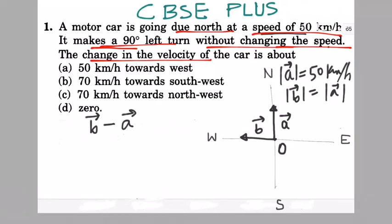We join the tails of the velocities. Now what is B minus A? B minus A is actually B plus minus A. So actually we are adding two velocities: B and plus minus A. So let's add it.